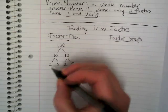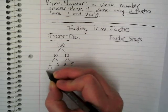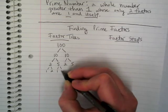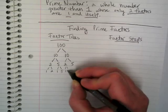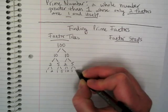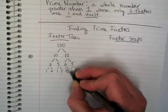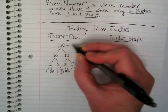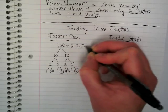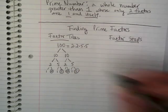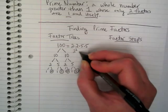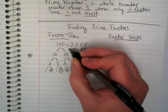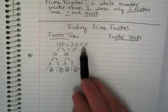The only way I can get 2 is 1 times 2, and the only way I can get 5 is 1 times 5. It starts getting a little messy as it gets closer, but those are my prime factors. That means 100 is equal to 2 times 2 times 5 times 5, or 2 squared times 5 squared. Both expressions show the same thing — we have two 2s and two 5s.